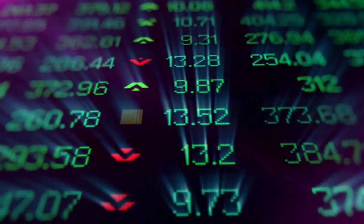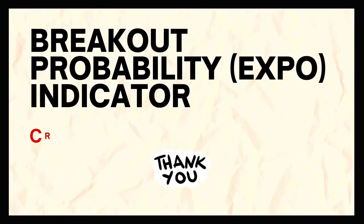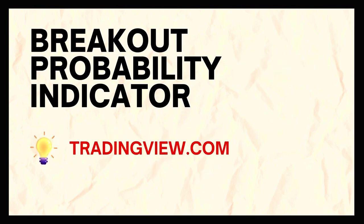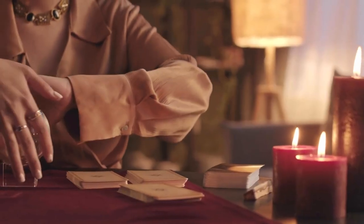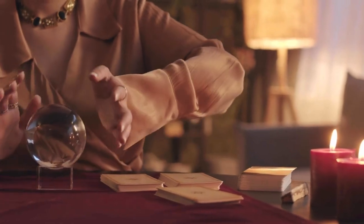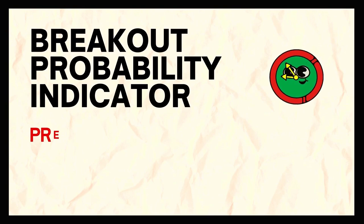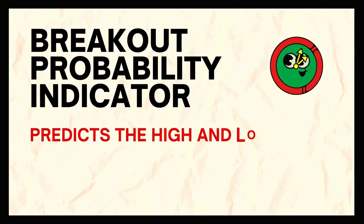This indicator will help you form your bias with algorithmic support. It is called Breakout Probability and you can apply it to your chart by going to TradingView.com — specifically the one created by Zyerman. It calculates the probability of a new high or low in the immediate future based on the previous candles, with that immediacy defined by the time frame you use.